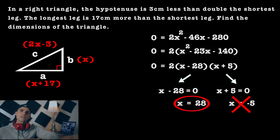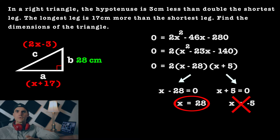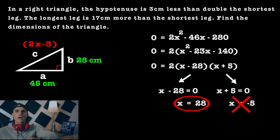So x equals 28 is our solution. Plugging x equals 28 into each expression: the shortest leg is 28 centimeters. For the longest leg, x plus 17, we get 45 centimeters. And for the hypotenuse, 2x minus 3, plugging in 28 gives us 53 centimeters.